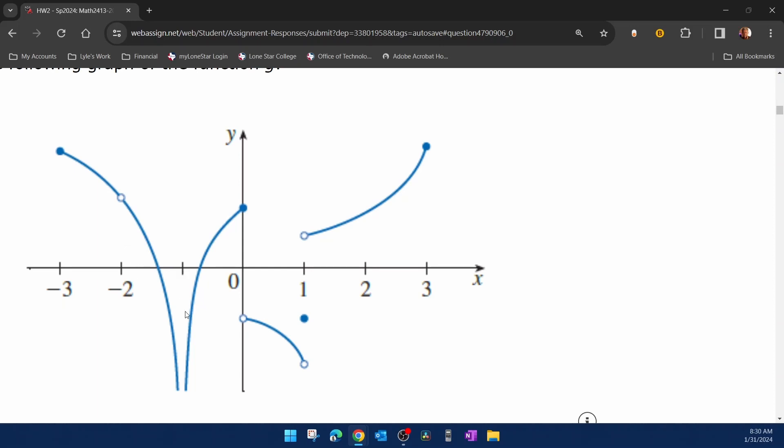Negative one, it would be discontinuous because the limit doesn't exist. Even though you're approaching the same value from both sides, which is negative infinity, negative infinity is not a number, so the limit doesn't exist.